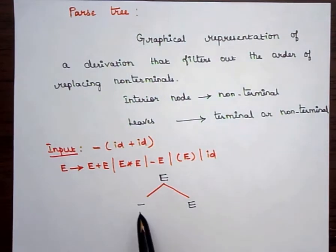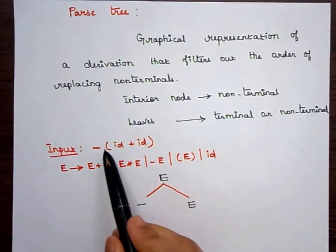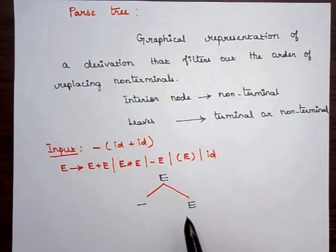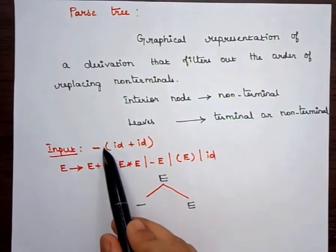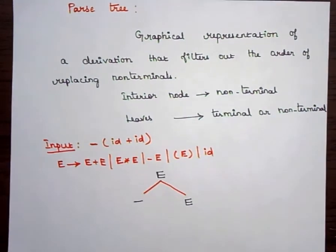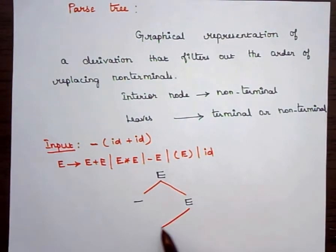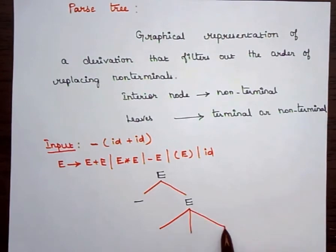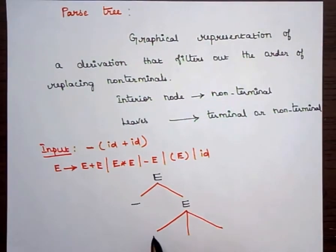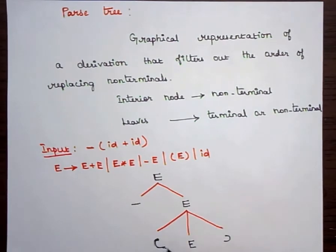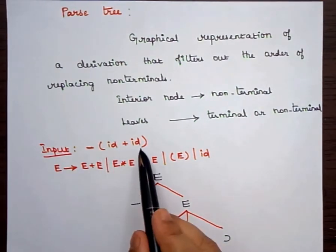So this E is again derived as minus E. Now we need an open parenthesis, so we have to derive it with this E. Looking at the productions, we choose the production that has open parenthesis, then E, then close parenthesis. So we get both the open and close parentheses.